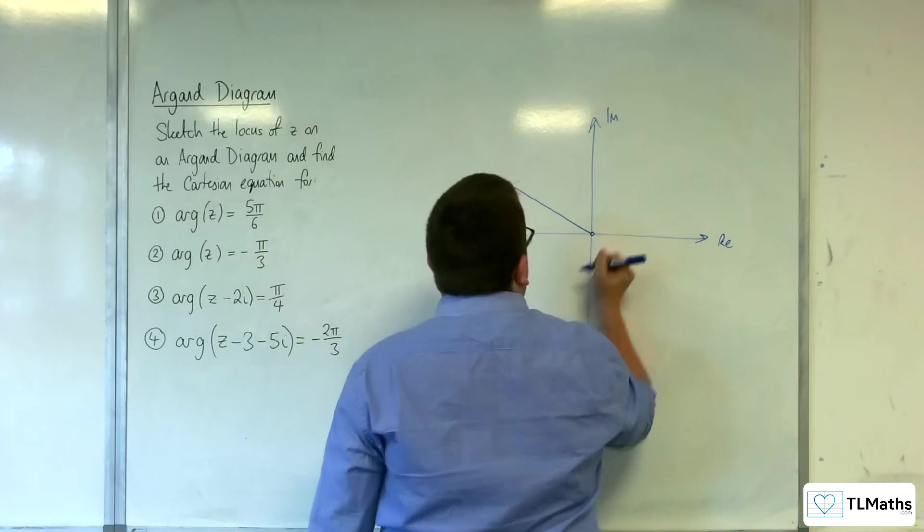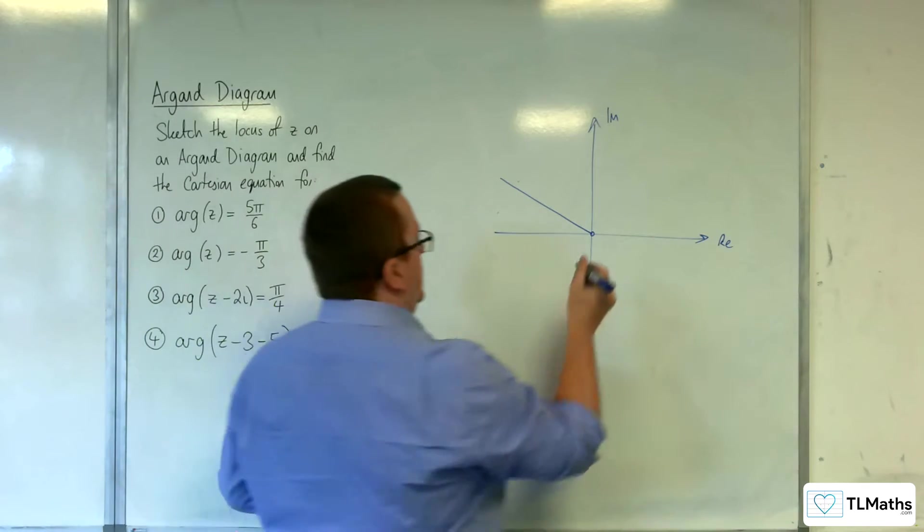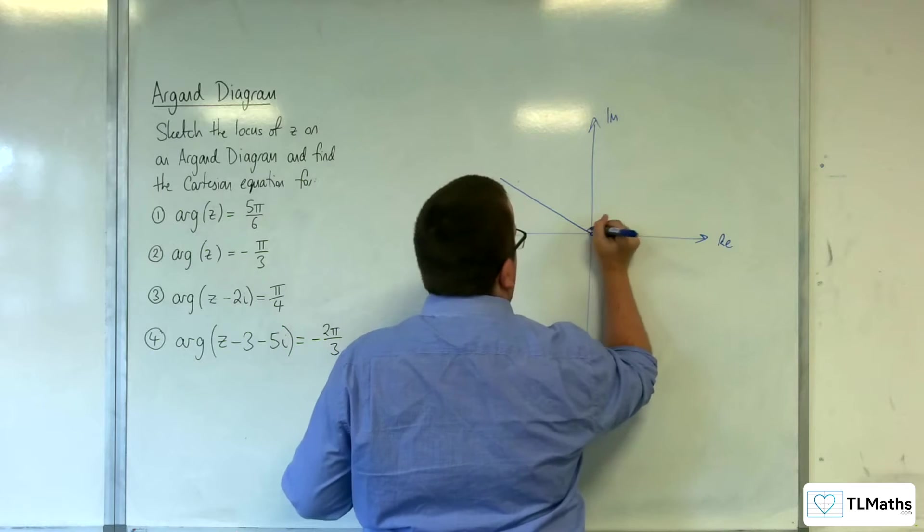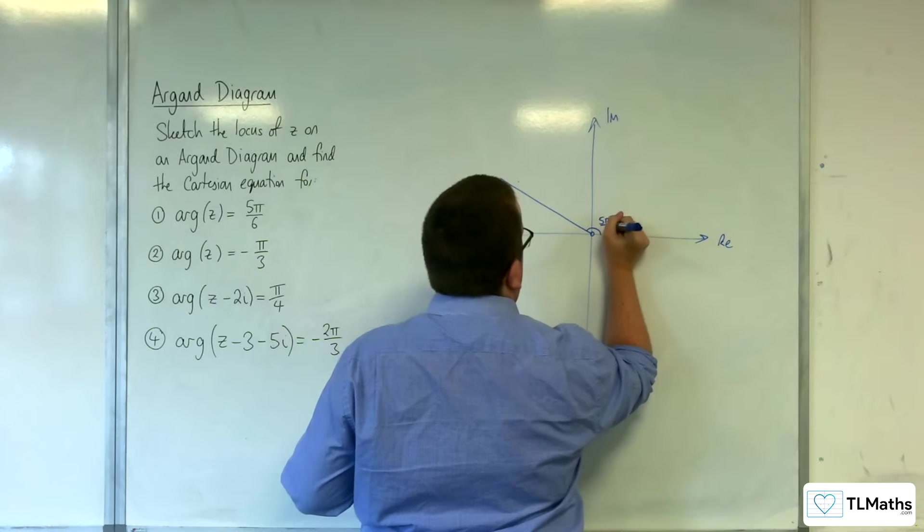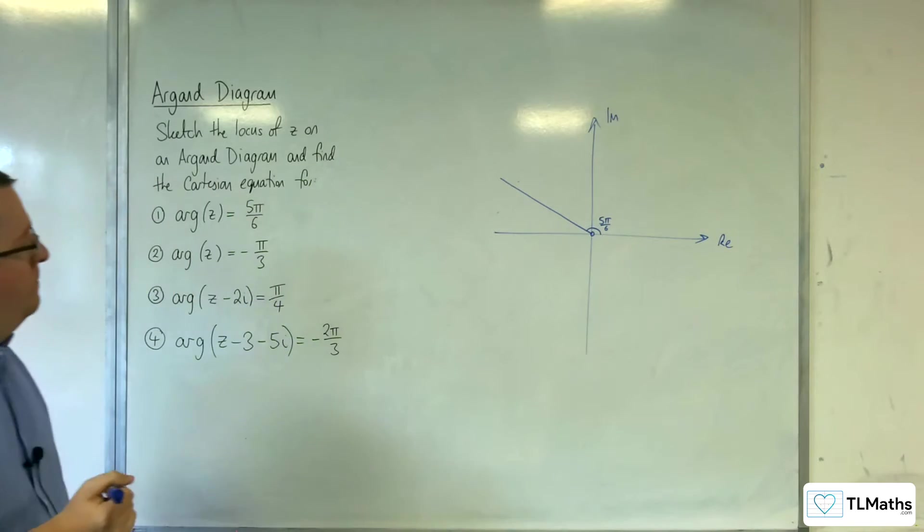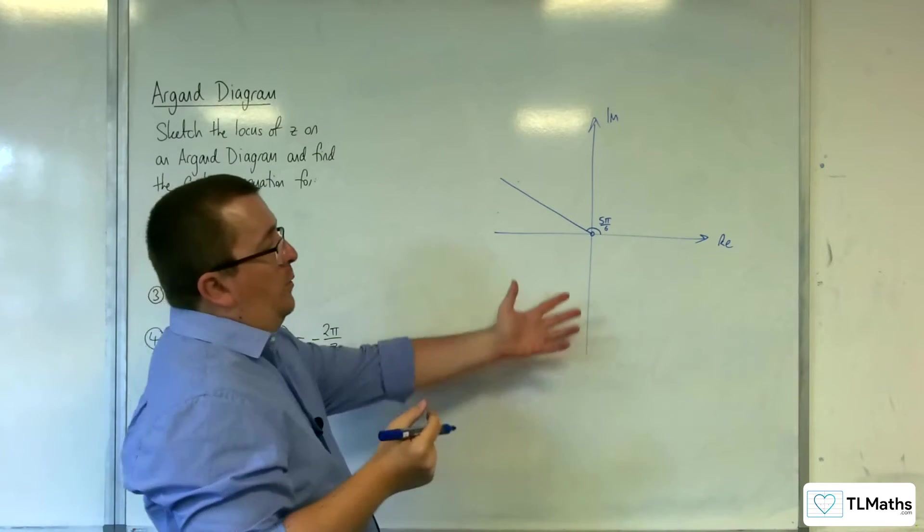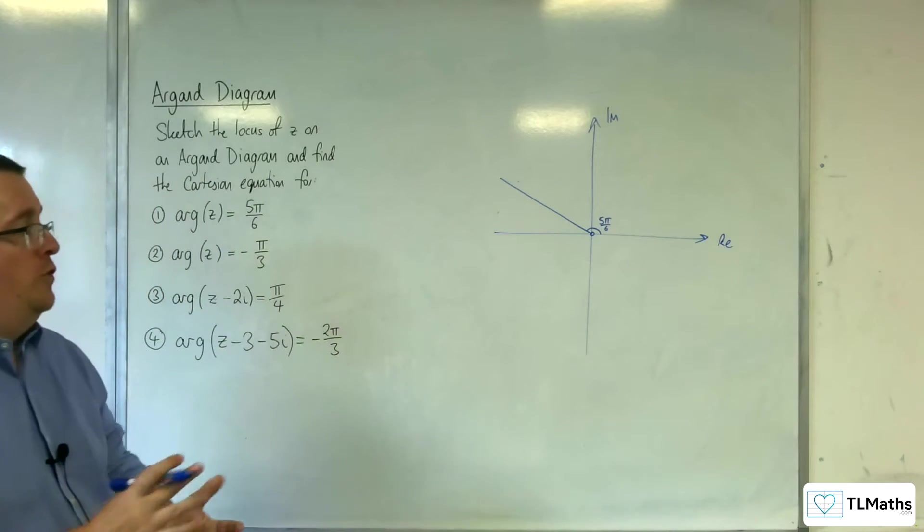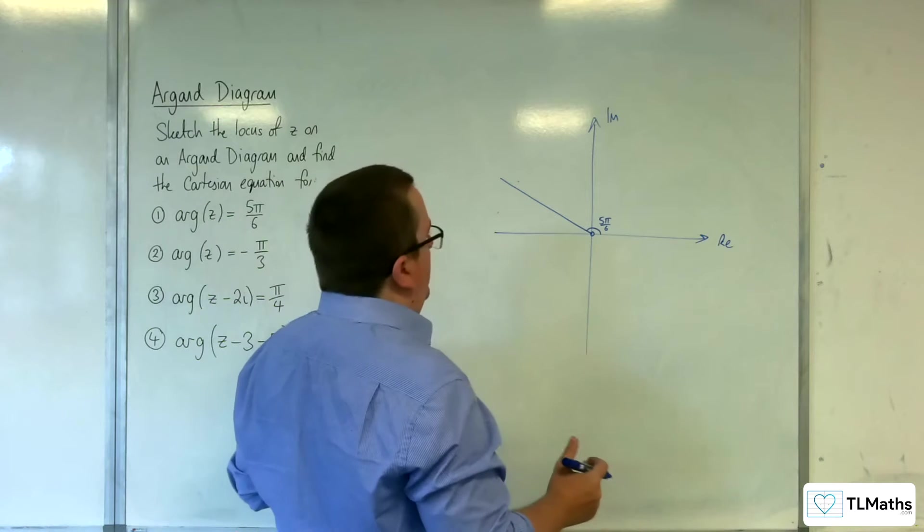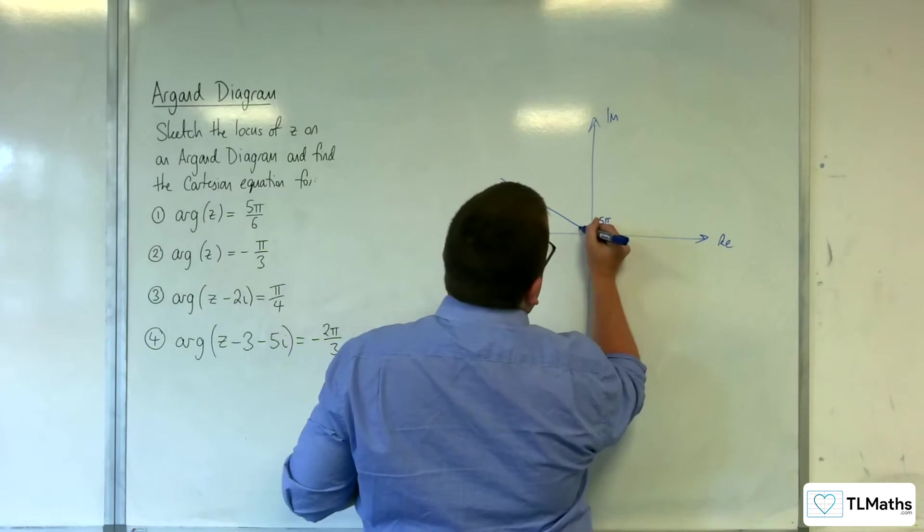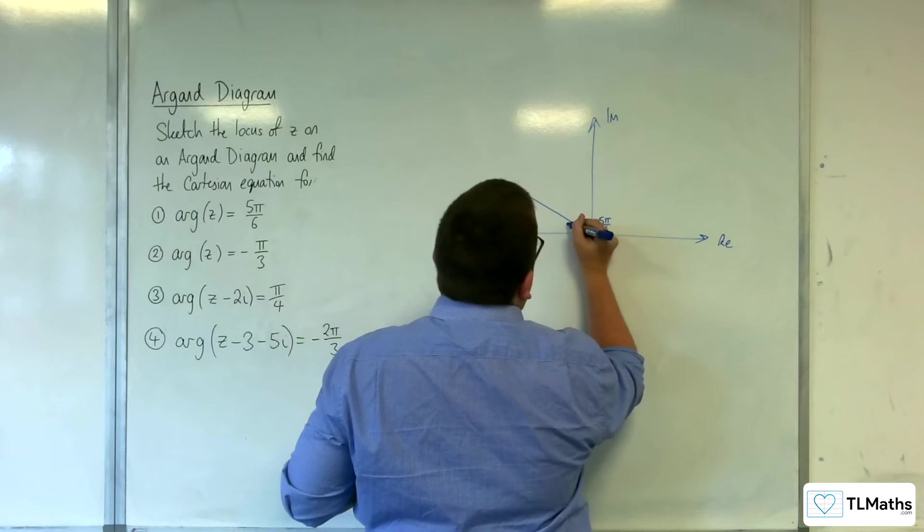At that point, the origin isn't included, of course. This angle here will be 5π over 6. And so, if I want to work out the Cartesian equation for this line, then really what I want to be working with is the fact that that angle is π over 6.